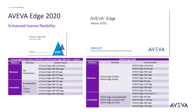A great motivation for existing customers to upgrade to Aviva Edge 2020 is that when they upgrade from an old InTouch Edge HMI or InTouch Machine Edition to Aviva Edge, they get extra tags at no additional cost — paying just the version upgrade, which is 50% of the license cost, or zero if they are under Customer First. For example, a 60,000-tag license becomes 64,000 tags, a 3,000-tag license becomes 4,000 tags, and a 1,000-tag license becomes 1,500 tags.